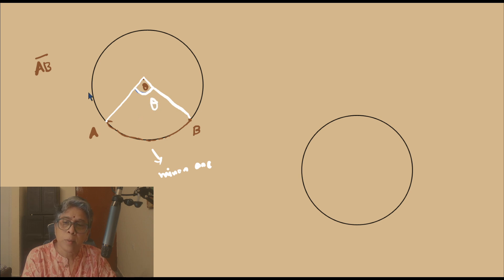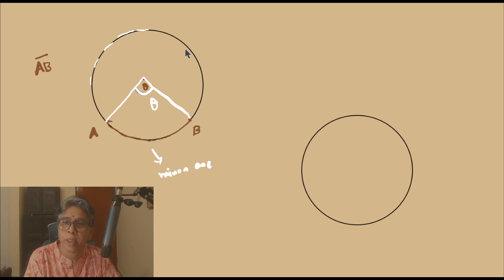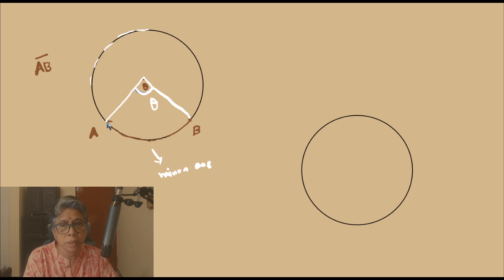Now what about the major arc AB? We know that this is the major arc. The arc which is longer in length is the major arc, and the angle subtended by the major arc would be the same.